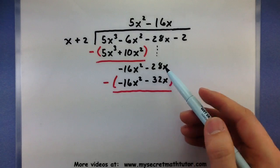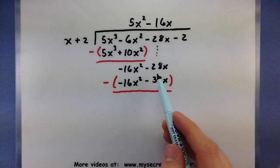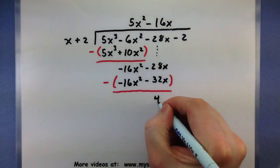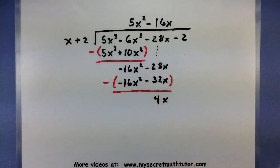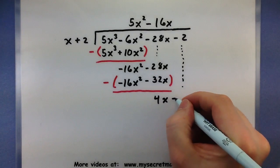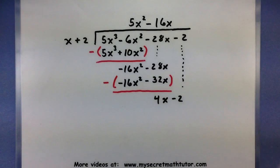-28x minus a -32x, so a -28x plus a 32, gives us 4x. Awesome. So we've done our subtraction, we'll bring down our next term, and of course repeat this.